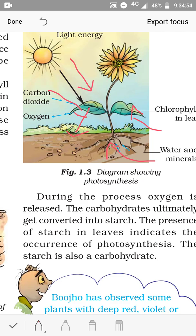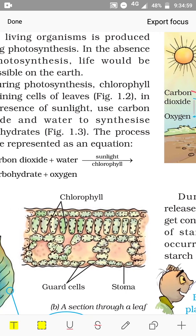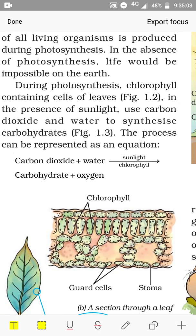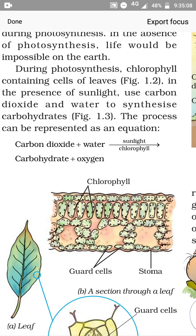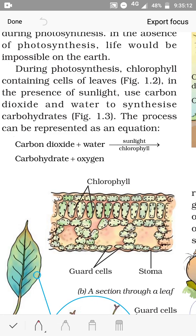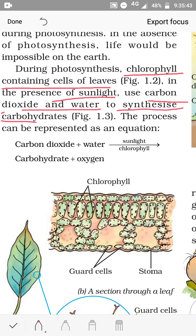Photosynthesis is the food-making process of plants. During photosynthesis, chlorophyll-containing cells of leaves, in the presence of sunlight, use carbon dioxide and water to synthesize carbohydrates. The Sun is the ultimate source of energy, and the Sun's energy can be trapped by chlorophyll, which is a pigment present in the cells of the leaves. The process can be represented as an equation: water and carbon dioxide, in the presence of sunlight and with the help of chlorophyll, produce carbohydrates. Oxygen is also released during this process.